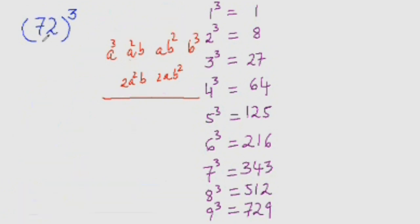So let's find 72 cube. So 7 cube is 343 here, you should memorize these. Now 7 square is 49 and 49 times 2 is 98. So write 98 here and double of 98 using the doubling technique is 196. Now 2 square is 4 and 4 times 7 is 28.